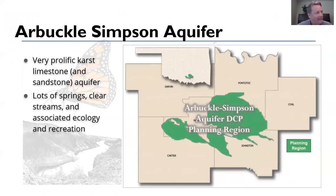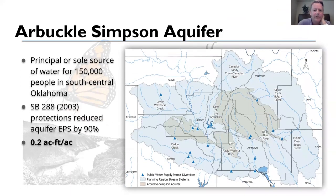The Arbuckle-Simpson Aquifer is a karst, limestone, and sandstone aquifer in South Central Oklahoma. It's a very prolific aquifer — lots of springs and clear streams emanating from it, with diverse ecology and recreational activities. It's also the principal and sometimes sole source of water for about 150,000 people in the South Central part of the state. Water suppliers are drawing water either directly from the aquifer or from the streams and rivers that emanate from it.